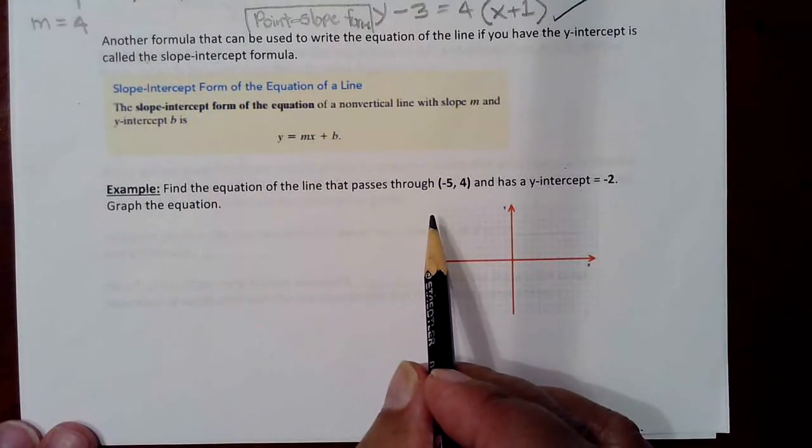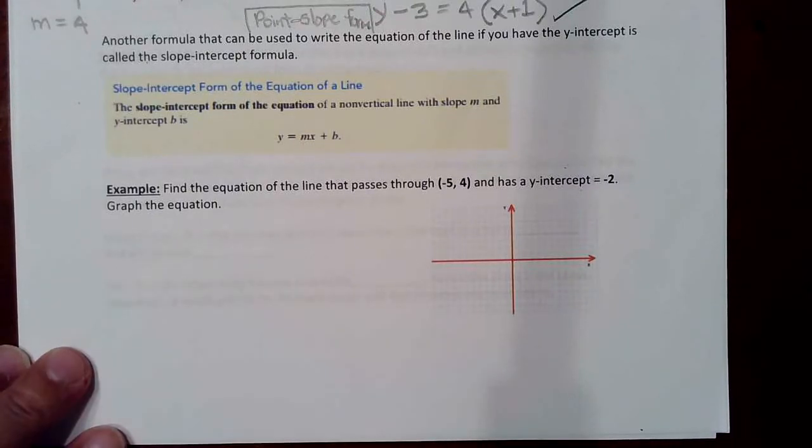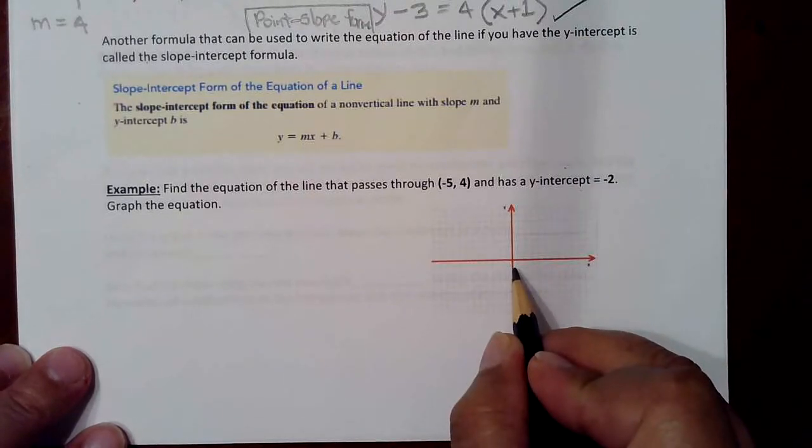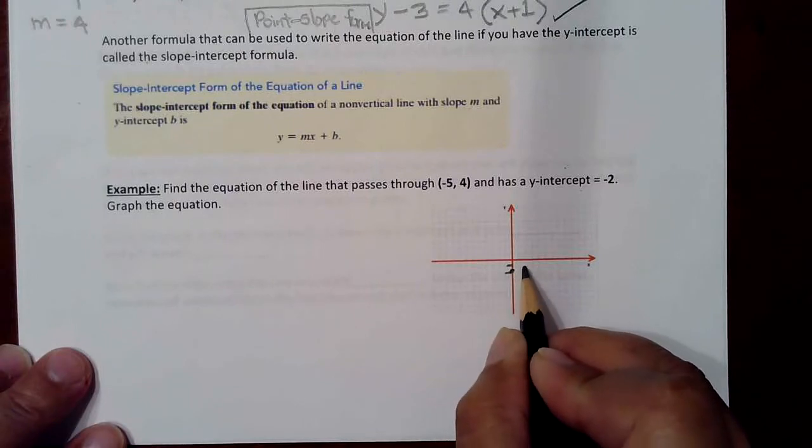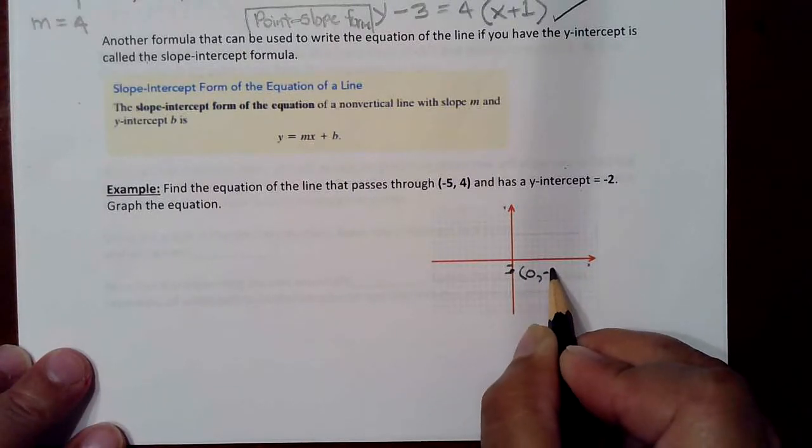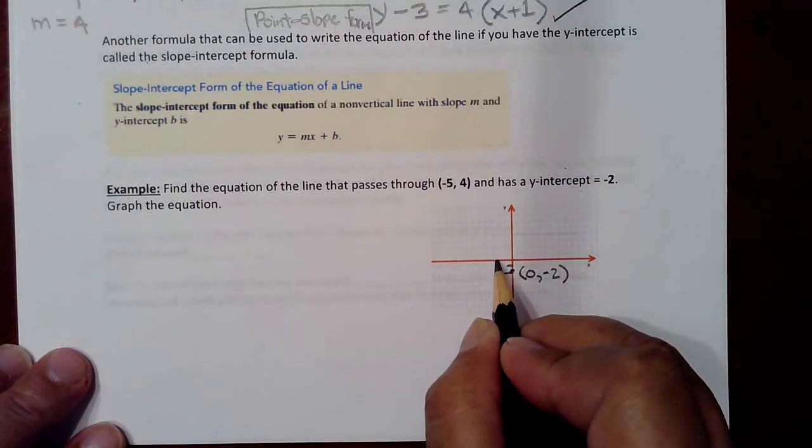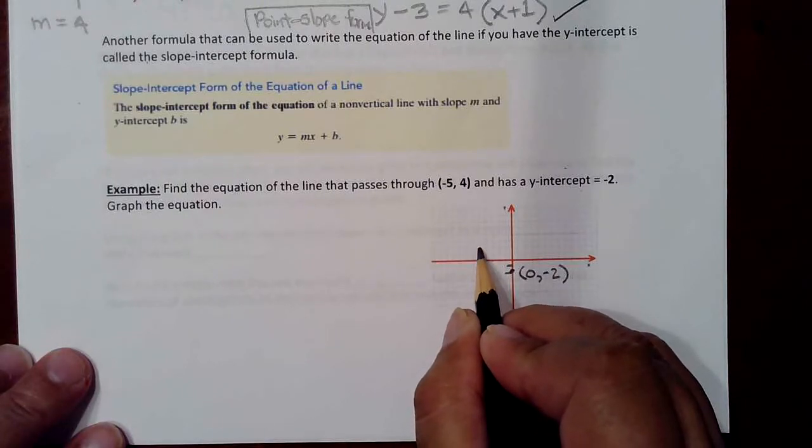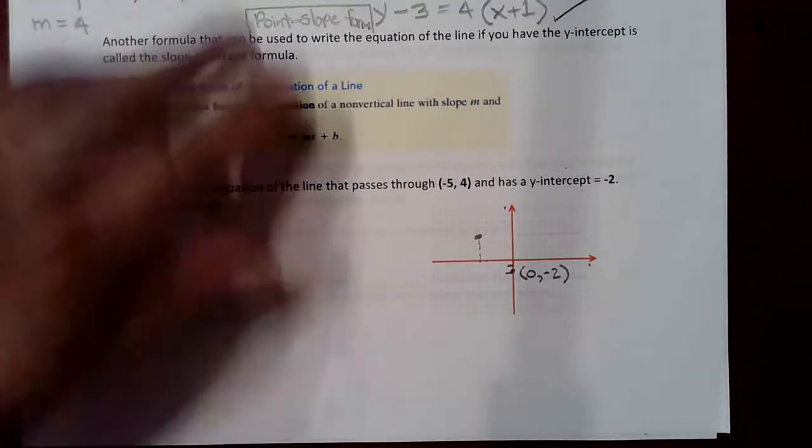So for instance, find the equation of the line that passes through negative 5, 4 and has a y-intercept of negative 2. Now if you have a y-intercept of negative 2, that's right here. That point is known as 0, negative 2. And then of course this line also goes through 1, 2, 3, 4, 5, negative 5, 4. Okay, so this is your line.